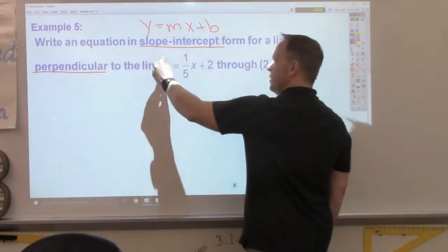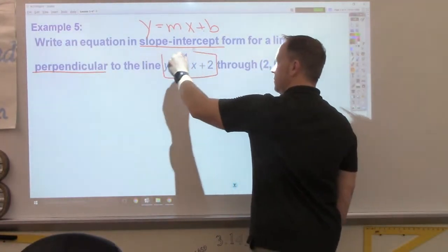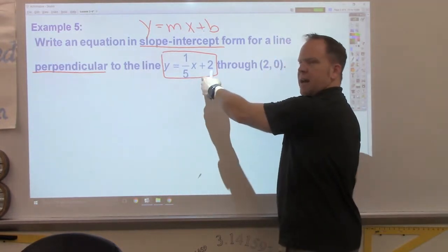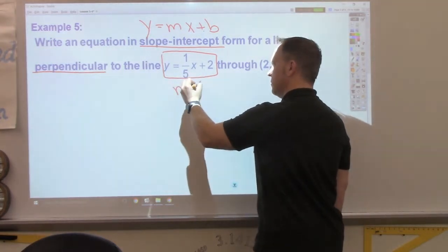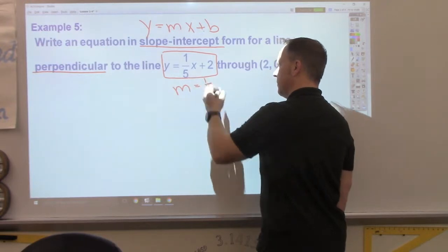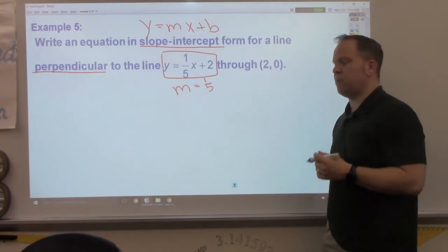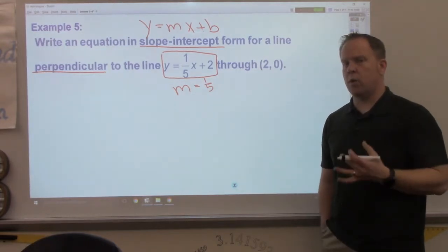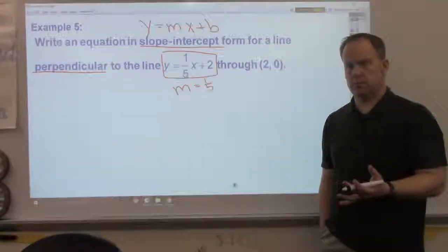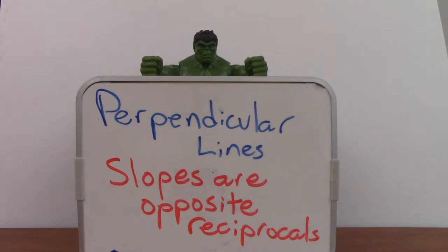To the line y equals one-fifth x plus 2 and goes through 2, 0. Now, I want it perpendicular to this line. What is the slope right now of this line? The slope of this line is... What if I want the equation of a line perpendicular to it? What do I have to remember?